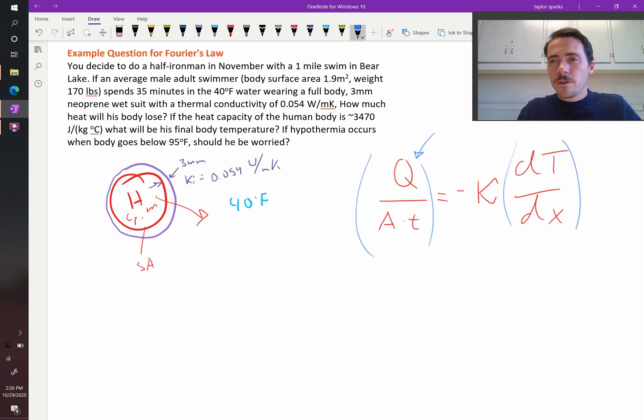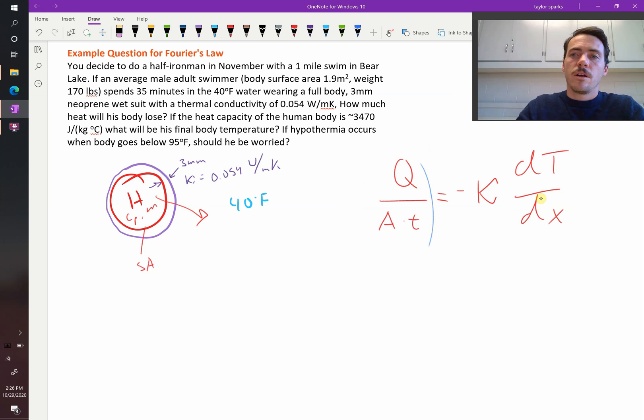And as a person cools down, then the temperature difference across this from the body to the water is changing. But in this case, we're going to say that it's not changing very much. It's a small change. Therefore, this is basically constant. That's the assumption here. Okay, so let's keep going. This is Fourier's law.